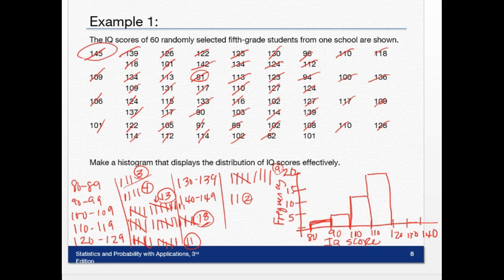120 to 129, I only had 11. 130 to 139, I had 10. And then 140 to 149, I had 11. So that's what my histogram would look like.